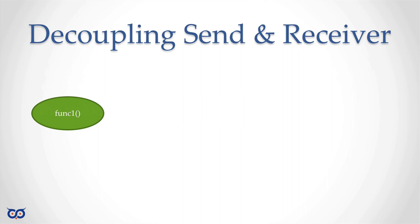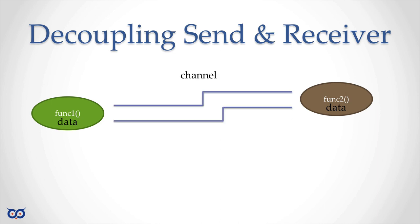Say I have function one and function two running concurrently. Function one generates some data — maybe reading from a file or generating random numbers — and I want to get that information into function two. Instead of using a shared data structure like a map, we can introduce a channel: function one sends data through the channel to function two. Function one is the sender, function two is the receiver.